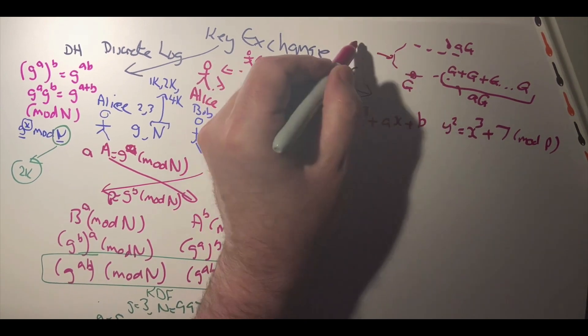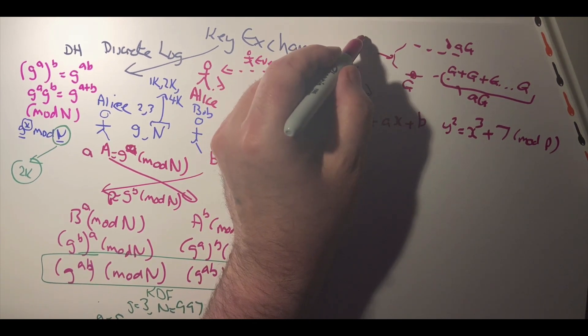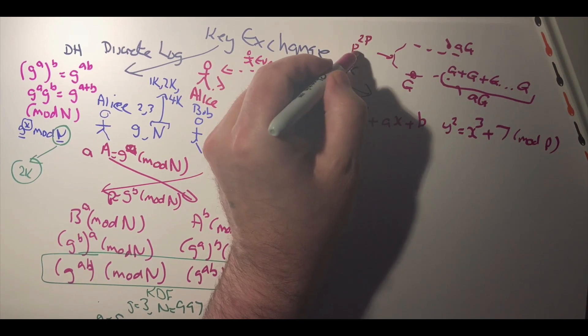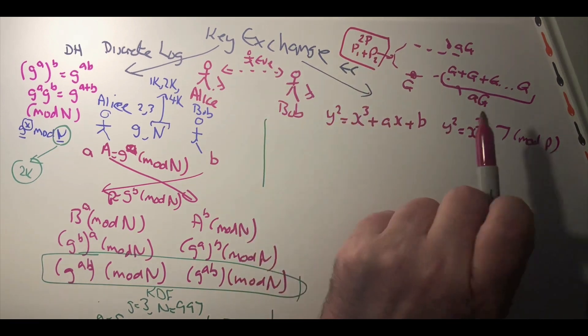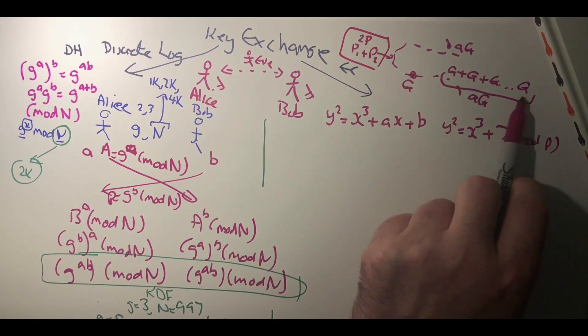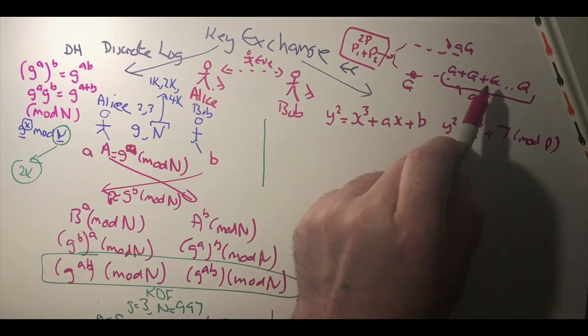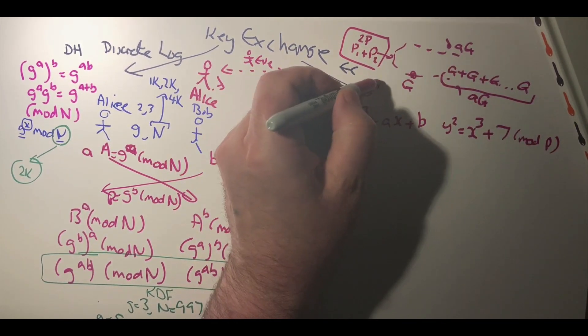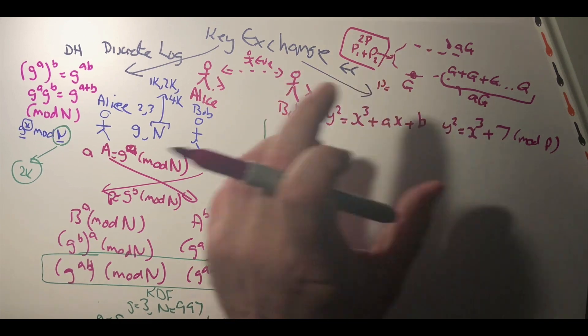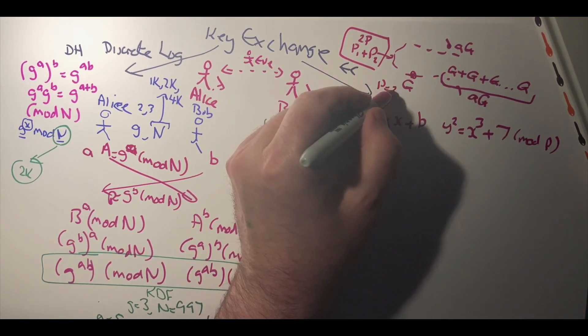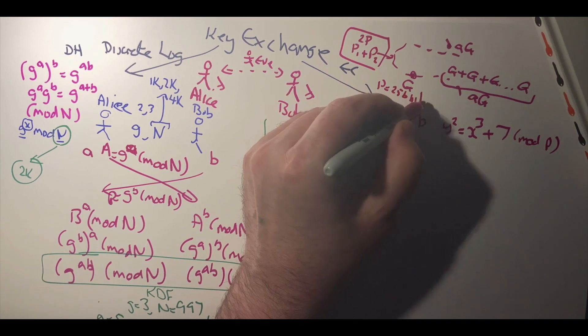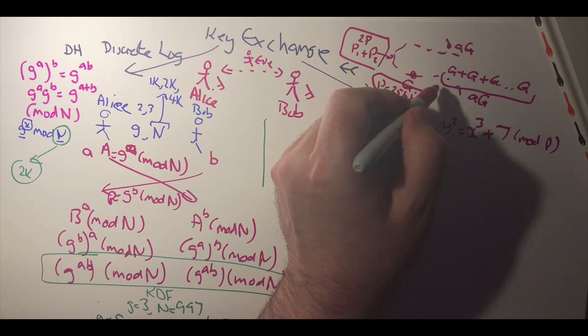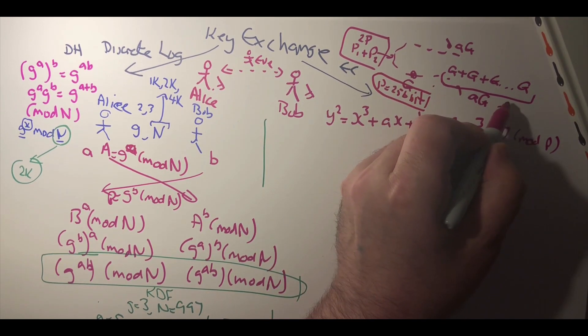The two basic operations that we have are point double and point add, and we can very quickly perform our operations here using that. This time though, the prime number is much smaller than the one that we have here.